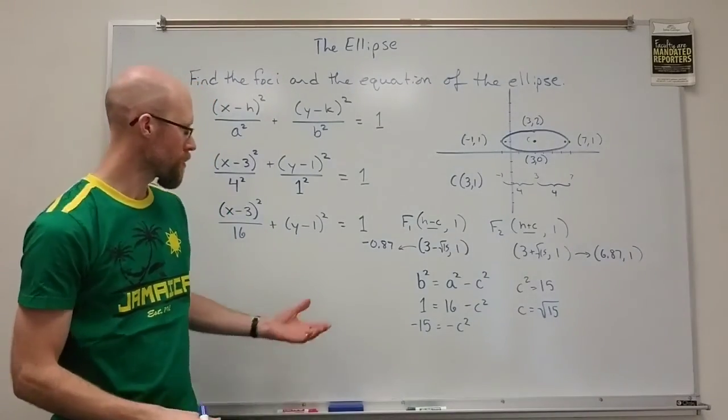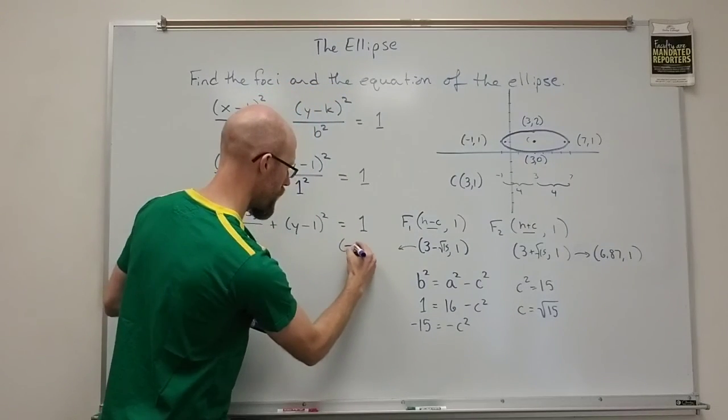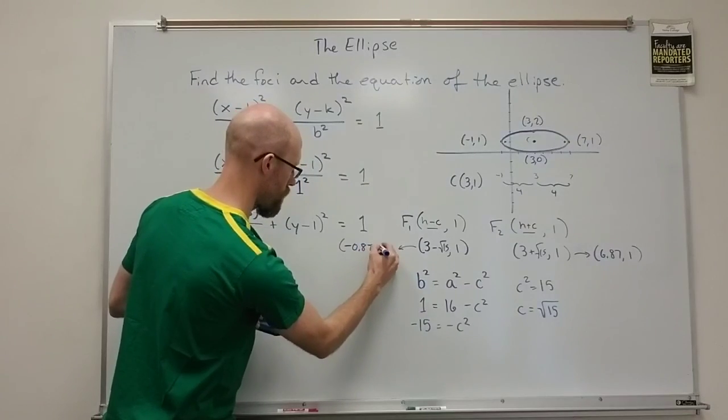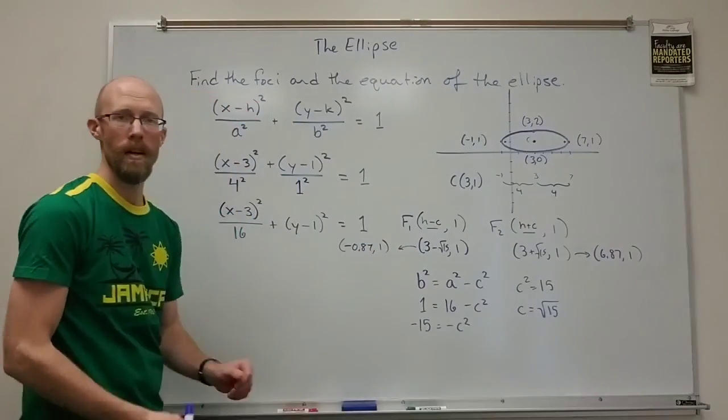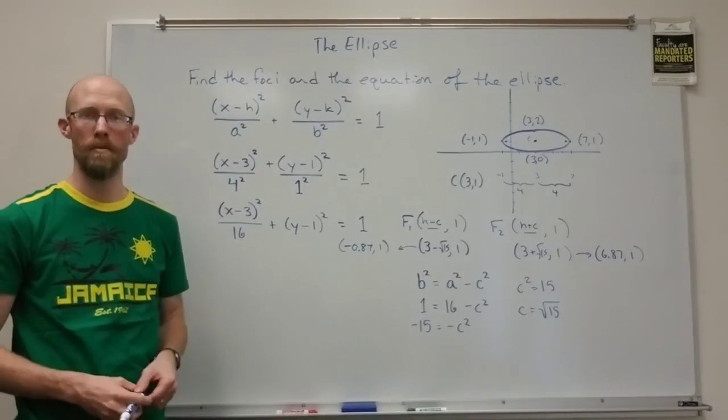And so I should put that in as an ordered pair shouldn't I? This would be negative 0.87 comma 1. So that gives us our two foci and the equation of our ellipse.